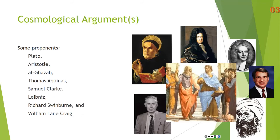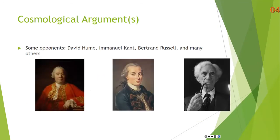So some proponents, you've got these fellows, Plato, Aristotle, Al Ghazali, Thomas Aquinas, Samuel Clark, Leibniz, Richard Swinburne, William Lane Craig. And we'll talk a little bit about William Lane Craig later on with his cosmological argument. So some opponents, David Hume, a giant when it comes to Western philosophy, Immanuel Kant, and Bertrand Russell, a 20th century atheist. I already quoted him earlier in the lecture. The universe is just there and that is all.